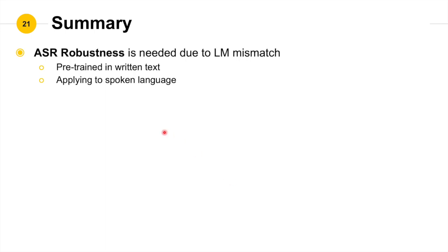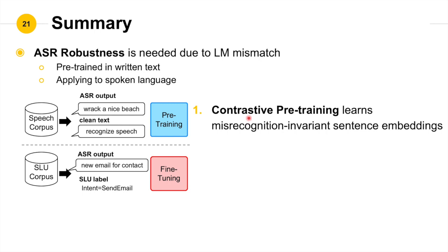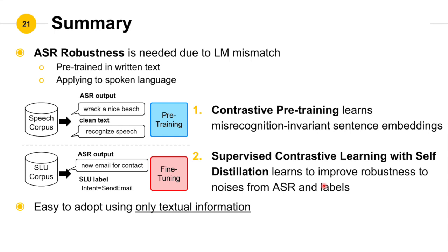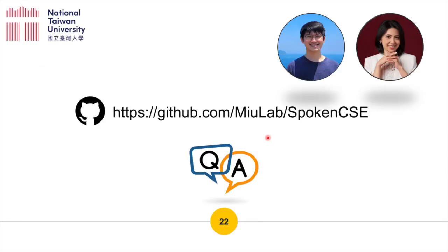Let me summarize. Our main focus is to adapt the pre-trained language model from written text to spoken language and improve its ASR error robustness. Our method first uses contrastive training to learn misrecognition-invariant sentence embeddings via contrastive learning. In the fine-tuning stage, we use supervised contrastive learning with self-distillation to improve robustness to ASR and label noises. The critical point of our proposed method is that we only use textual information, so it can be adopted more easily. Thank you very much. This is the end of my presentation. We published our code on GitHub — please check it if you are interested.